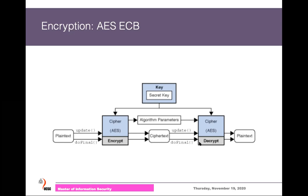We can then send the encrypted data to the recipient. On the recipient side, we use the same algorithm, feed the same symmetric key, and call update to perform decryption. To get the last block, we call doFinal, which returns the final decrypted block. If you have a small amount of data, you can directly call doFinal instead of the update method.